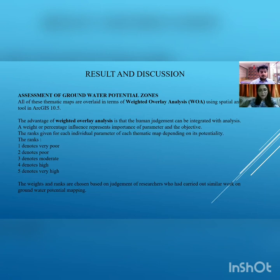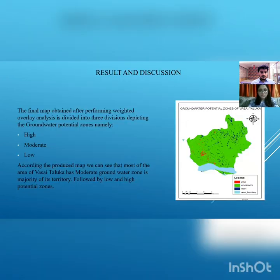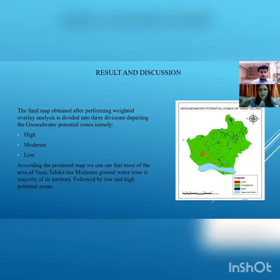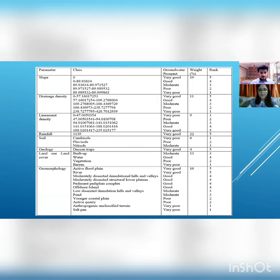The last and final stage of the project is weighted overlay analysis. In this step, weights are assigned to each of the eight maps according to their influence and potentiality on groundwater. It is ranked from 1 to 5 as very poor, poor, moderate, high and very high. These weights were assigned as per the judgment of researchers who have done work on similar projects previously. The table shows the ranks and weights given to all eight layers. The highest and most impactful factors are rainfall, slope and geomorphology, having ranks of 22, 19 and 16 respectively.